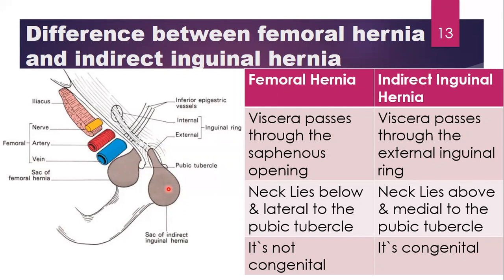Indirect inguinal hernia can be observed in newborn babies, but you will hardly ever find femoral hernia in newborns because femoral hernia is not congenital — it is caused by increased intra-abdominal pressure from sports or labor. These are distinguishing factors between inguinal hernia and femoral hernia.